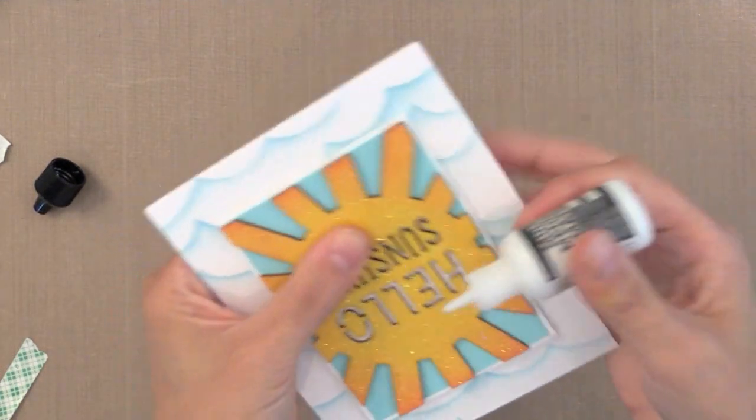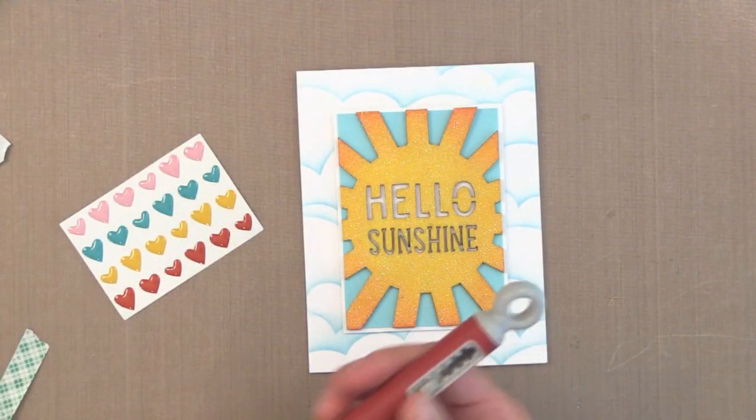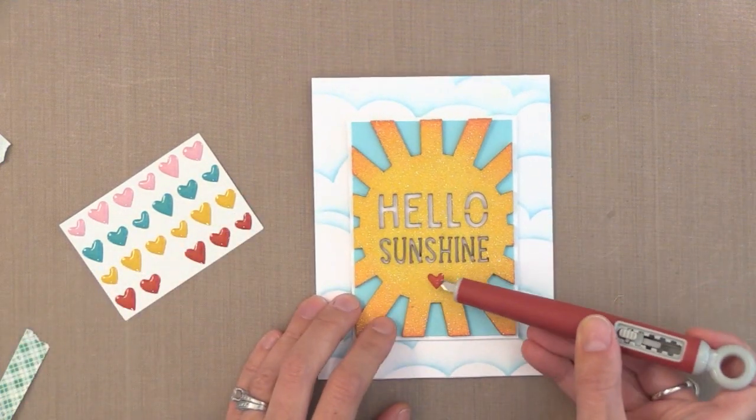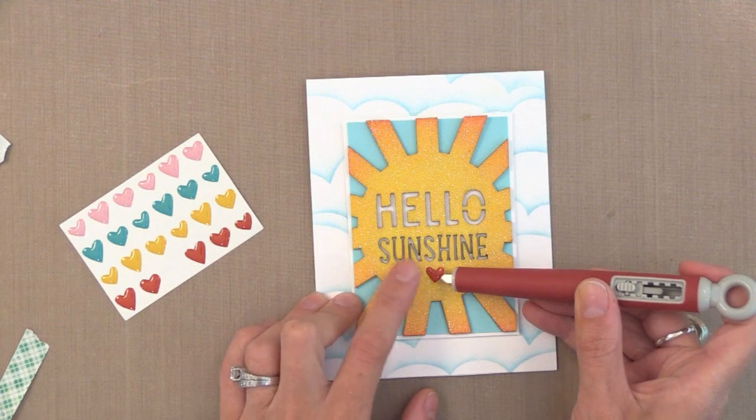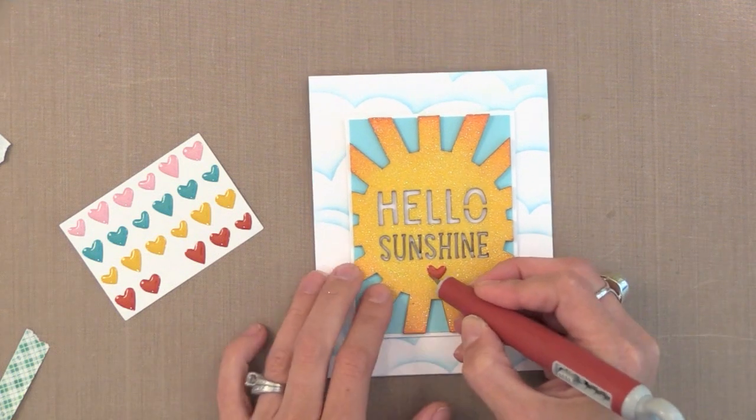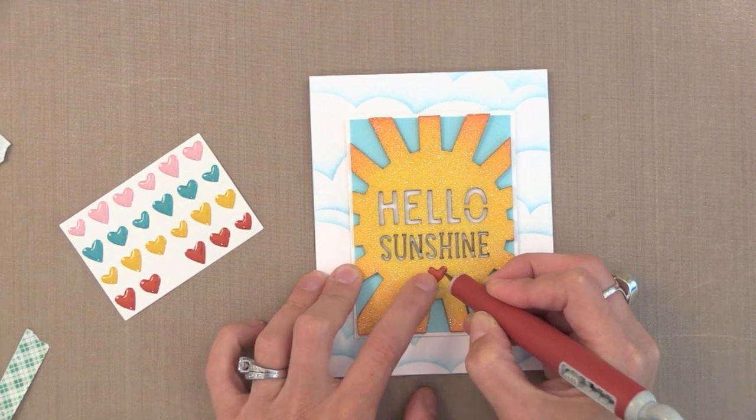Now I decided to add a fun little red heart on here. This is from that Freckled Fawn kit that that wood veneer is also from. I love these little enamel hearts. They're just so cute. I'm going to stick this on the bottom here and there we're done. It's a pretty quick and simple card with lots of fun techniques on it.